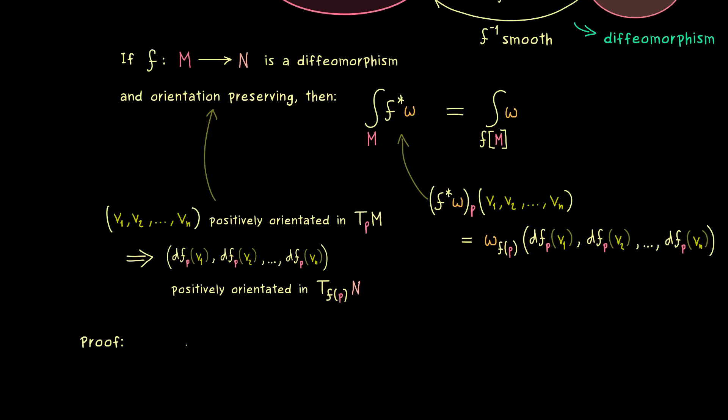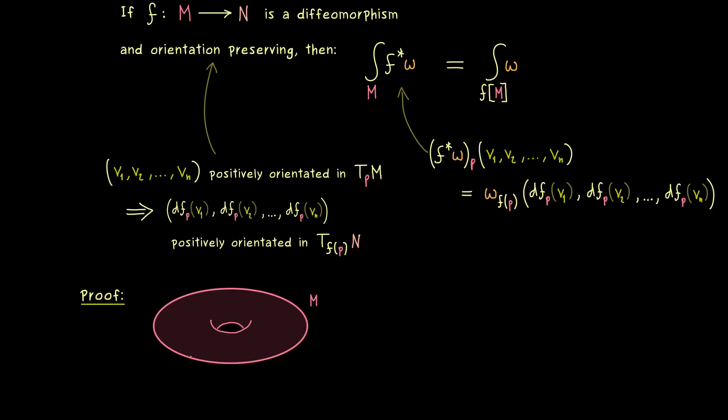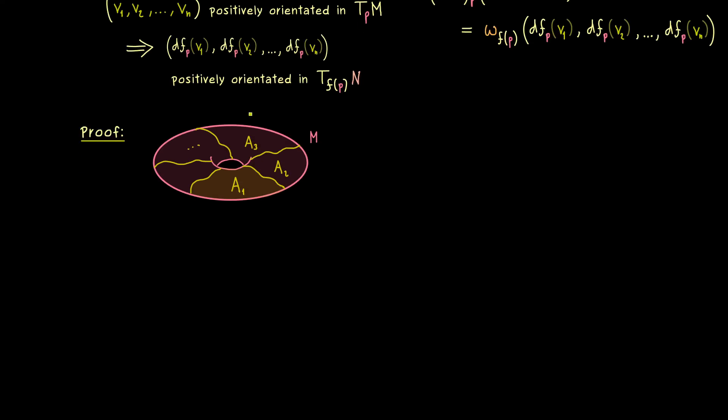And it turns out that this proof is not so complicated because we have done the hard work already in former videos. Therefore we just have to recall what we already know from the integral, namely that we can split up M into countably many subsets. And as before, let's call these subsets A1, A2, and so on.